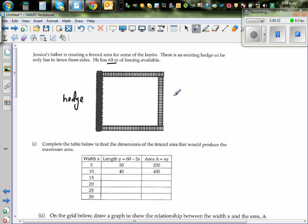If the width is x, so this is the width, the remaining length would be 60 minus 2x. So let's take the width as x. The width is x here, so here also it will be x. So if this is x plus x, this would be 60 minus 2x. That's already given in this table.